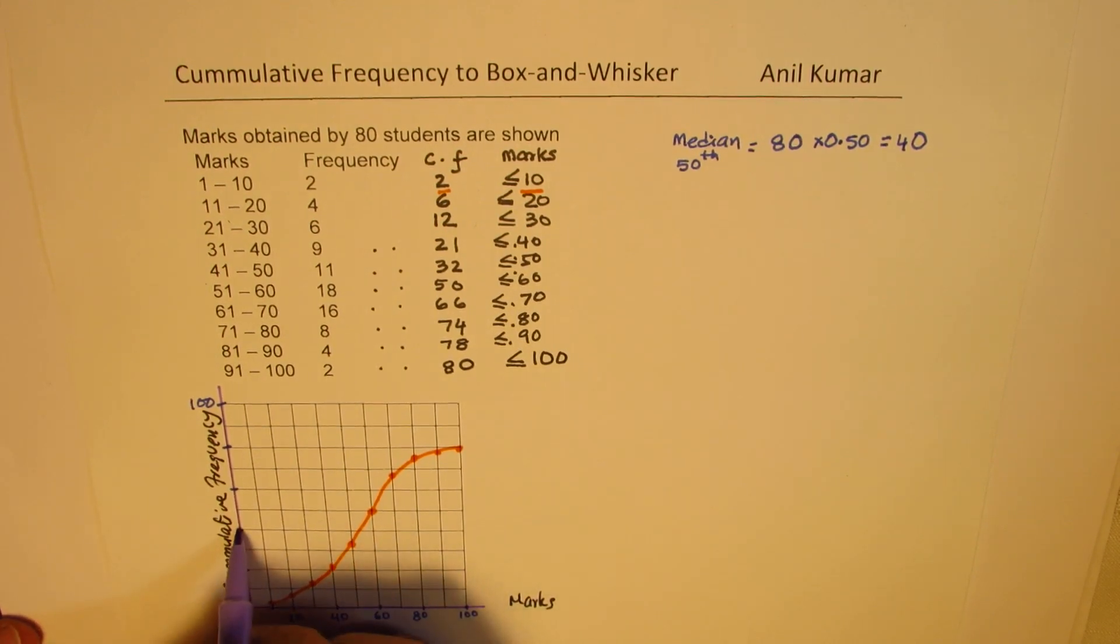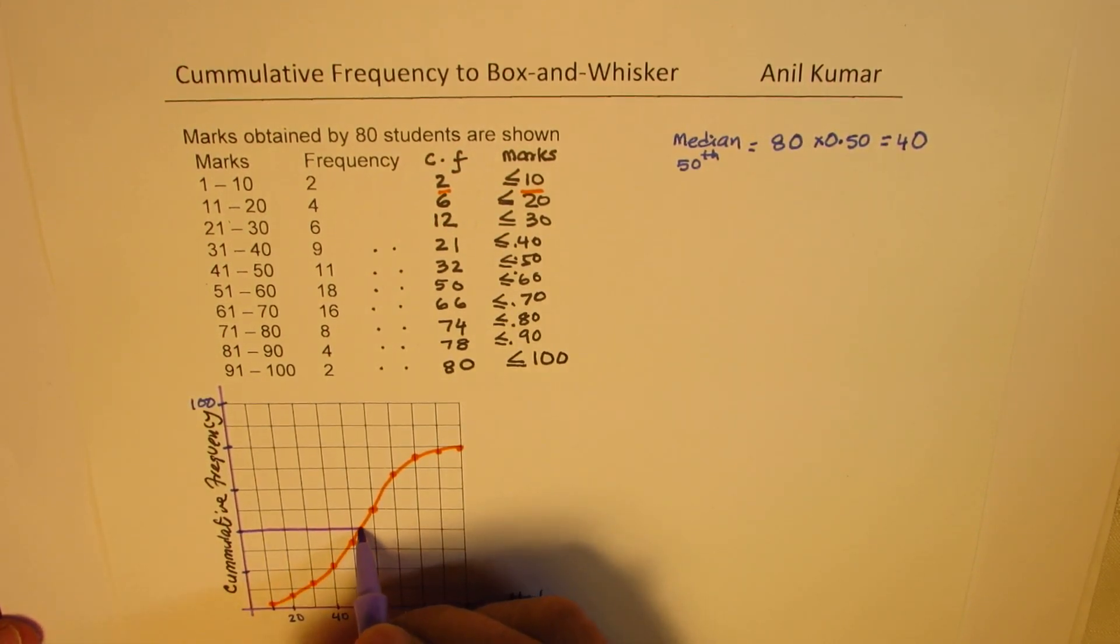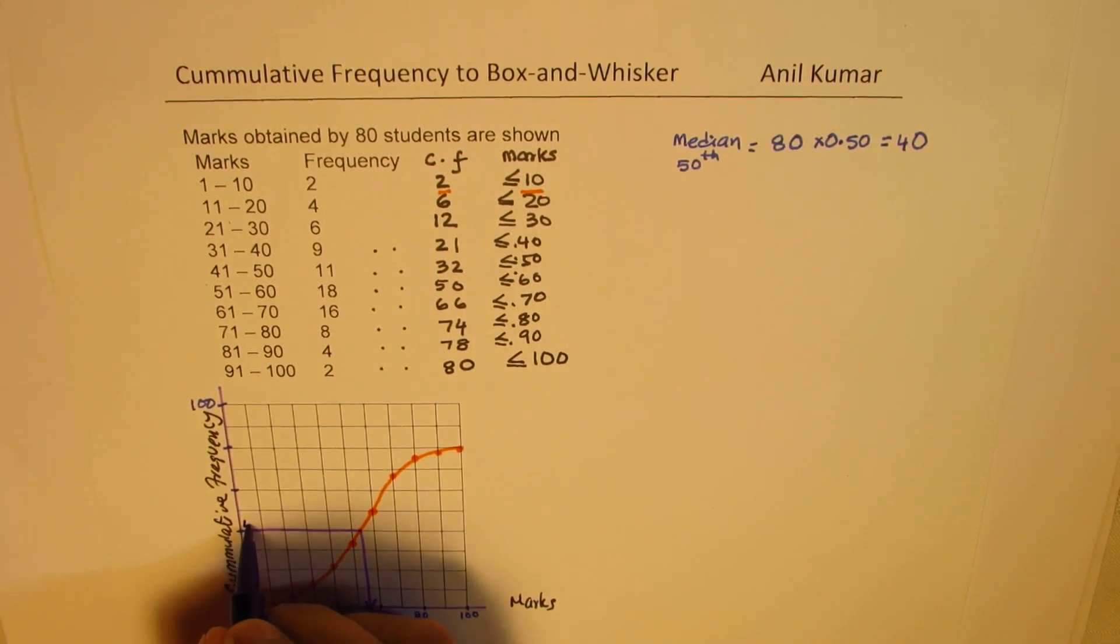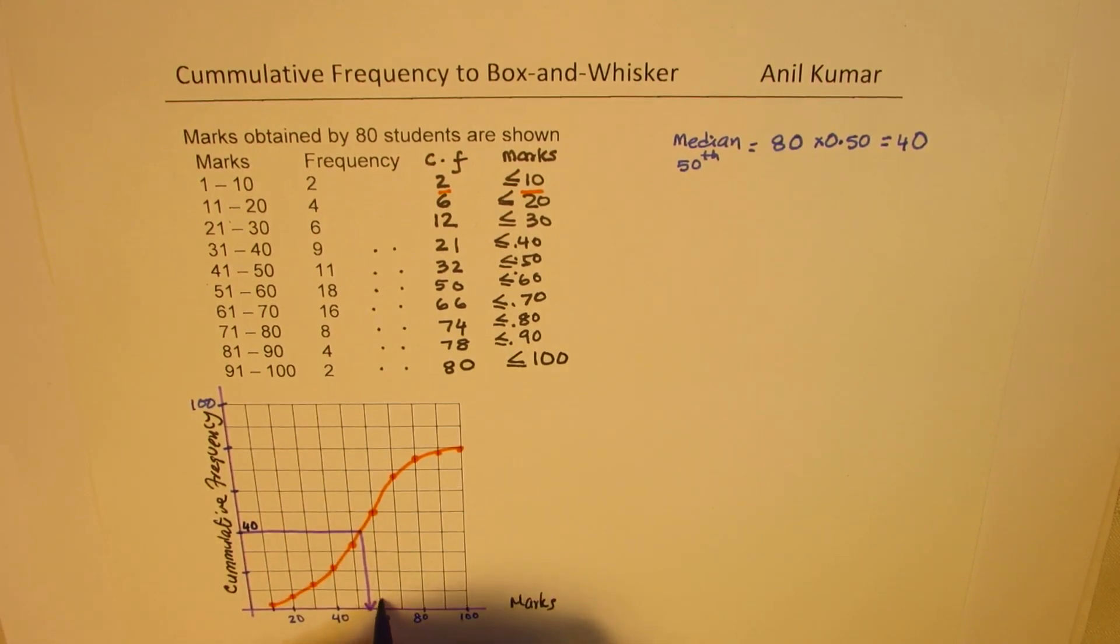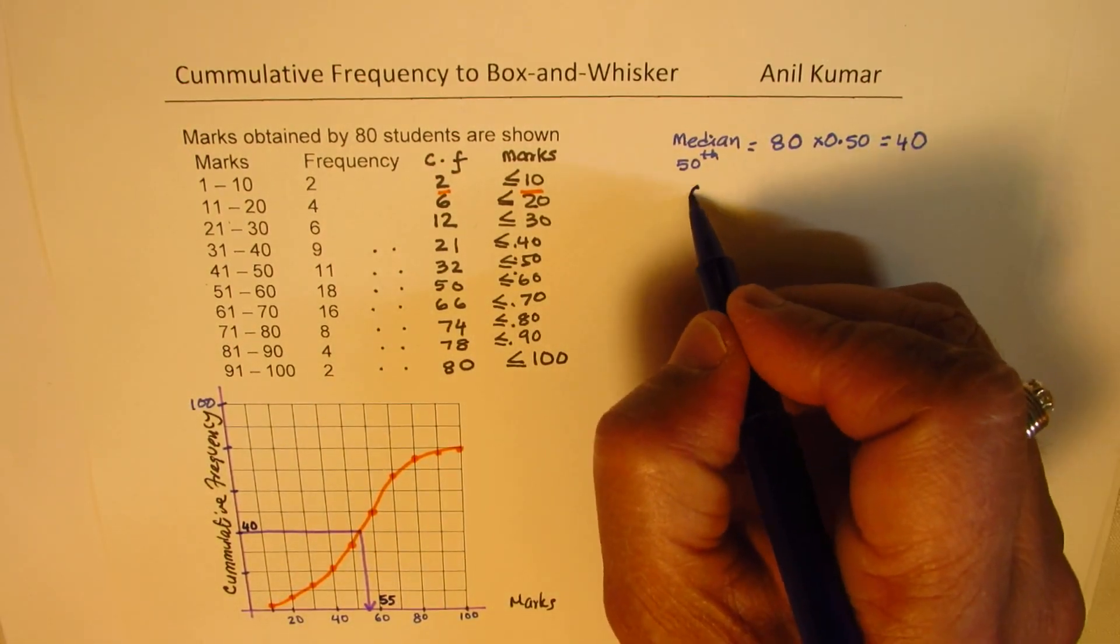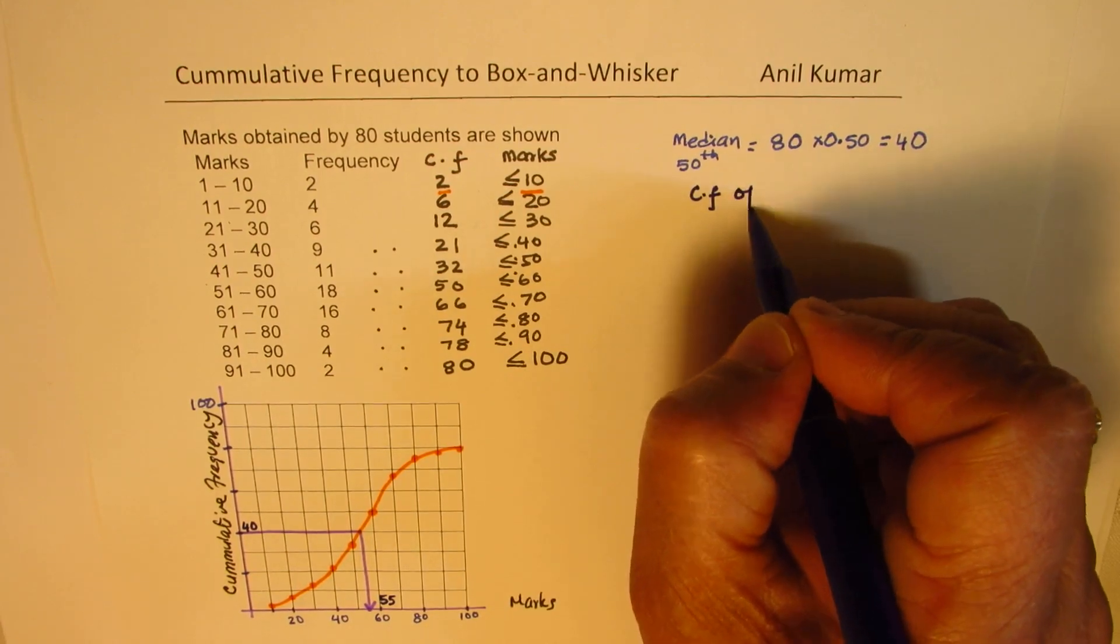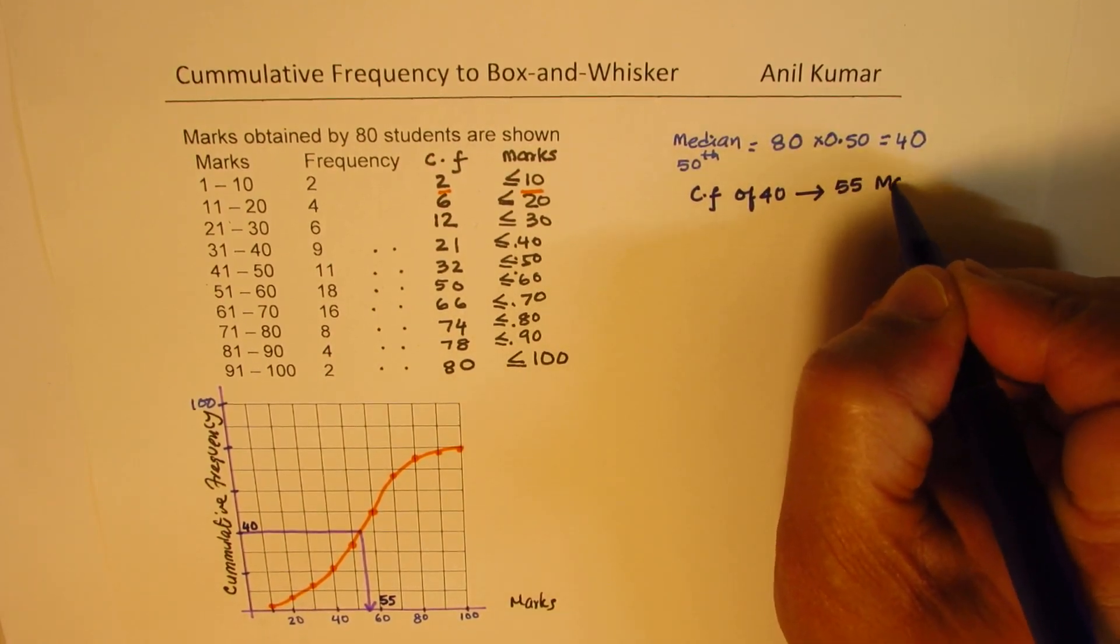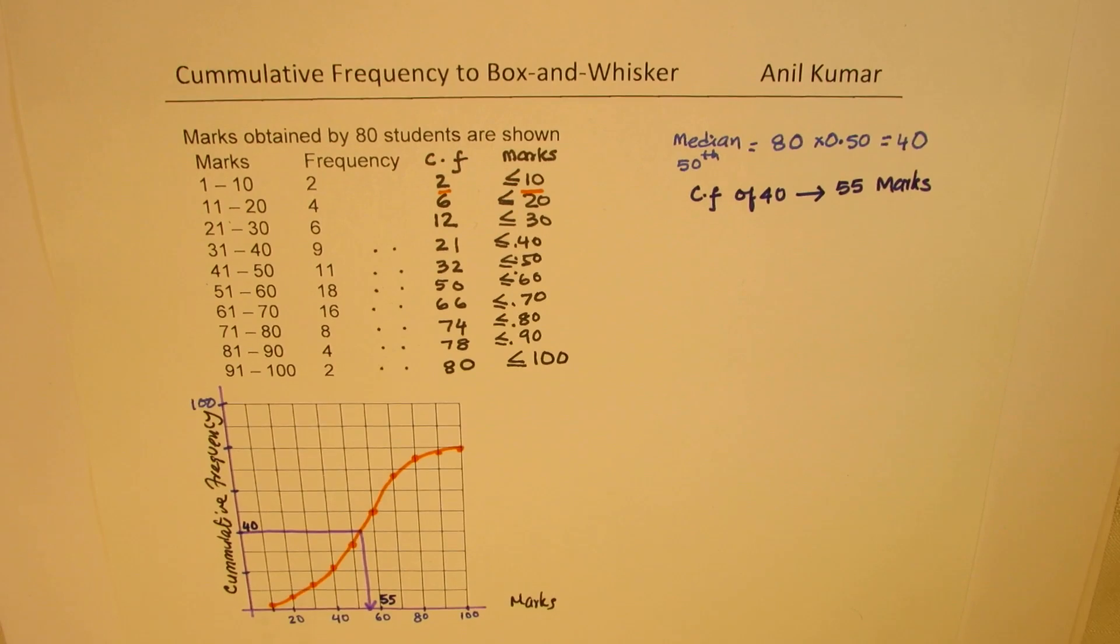This is 20 and this is 40 for us. So, for 40, we will go and then check what do we get. It seems it is around 55. The value which we get here is, this is for 40. The value which we get here is, let me write here, 55. So, for 40, the cumulative frequency of 40 actually relates to 55 marks, as you can see here. So, that becomes the median for us.